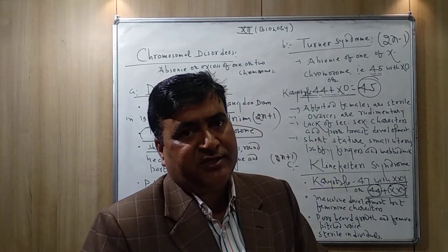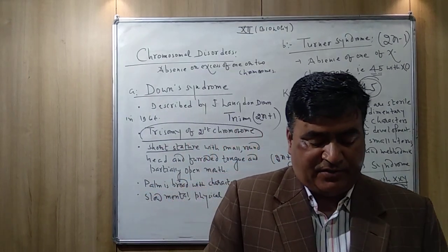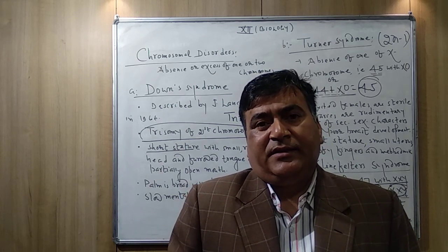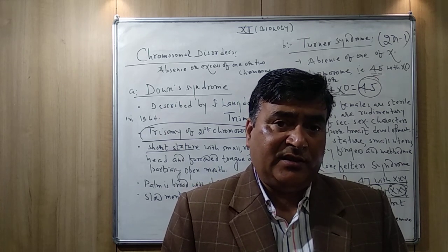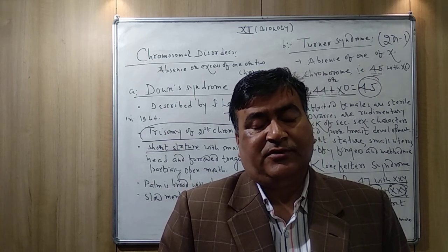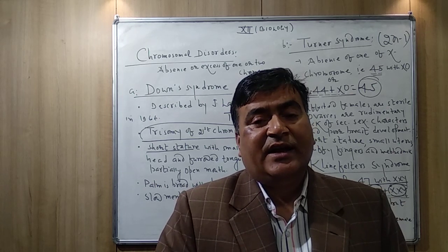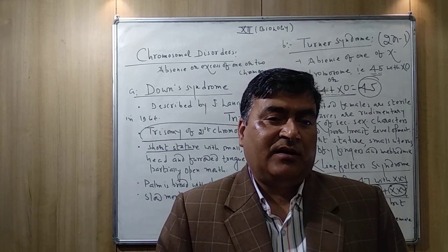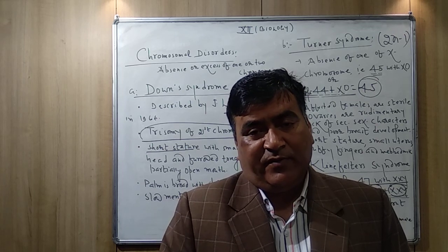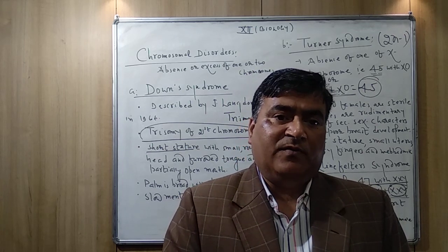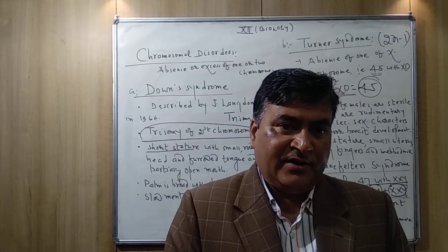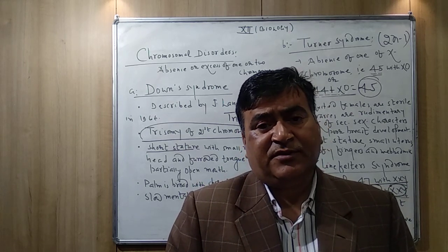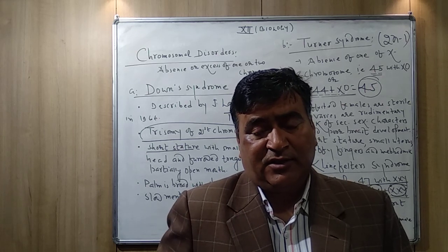All three syndromes involve either trisomy or monosomy, which are included under the heading of aneuploidy. Aneuploidy is the condition in which one or two chromosomes are added or deleted from the normal sets of chromosomes. It comes under chromosomal disorders.